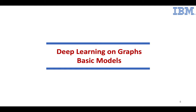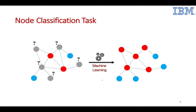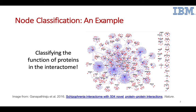Now let's talk about some basic models in deep learning on graph. The node classification task defines a function to transform a node into a latent space — essentially learning its embedding. Once we learn an embedding, we can predict, for example, whether a question-mark node carries a red or blue color. This corresponds to the node classification task. In the real world, this technique is used to classify the function of proteins in interaction networks.